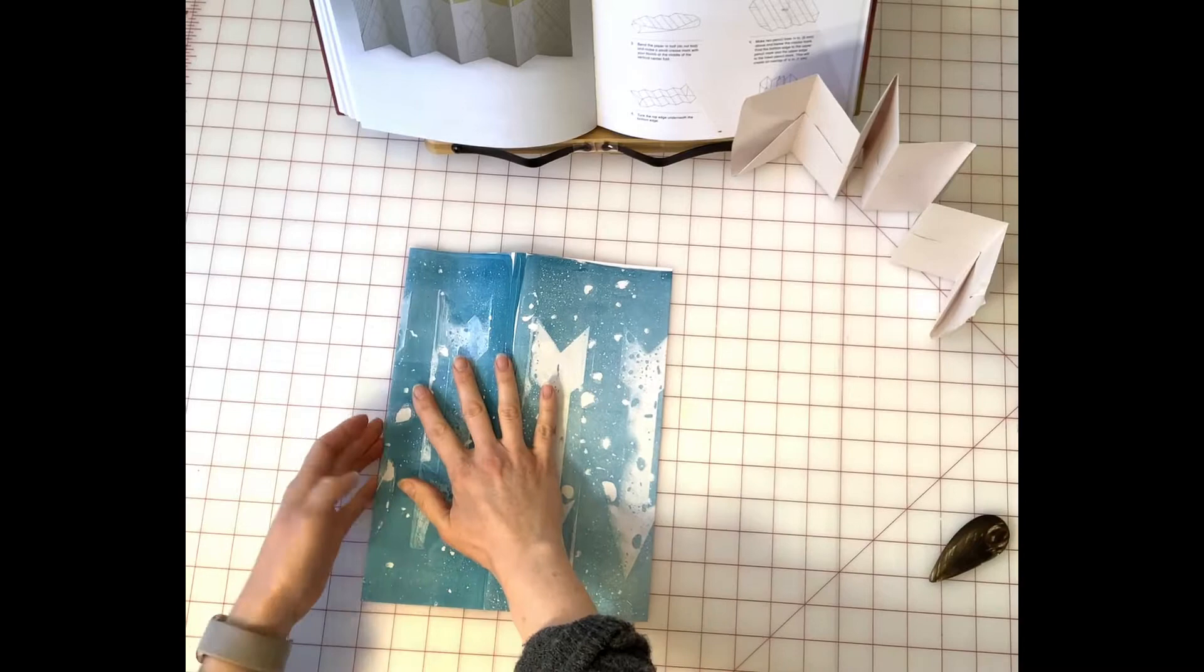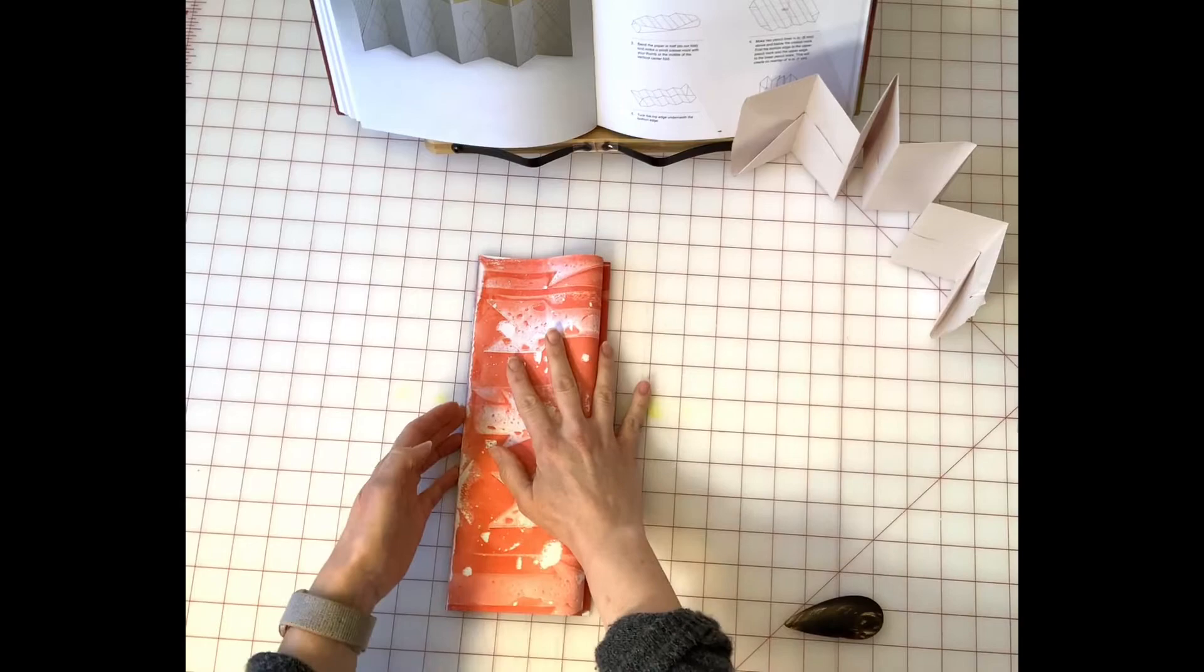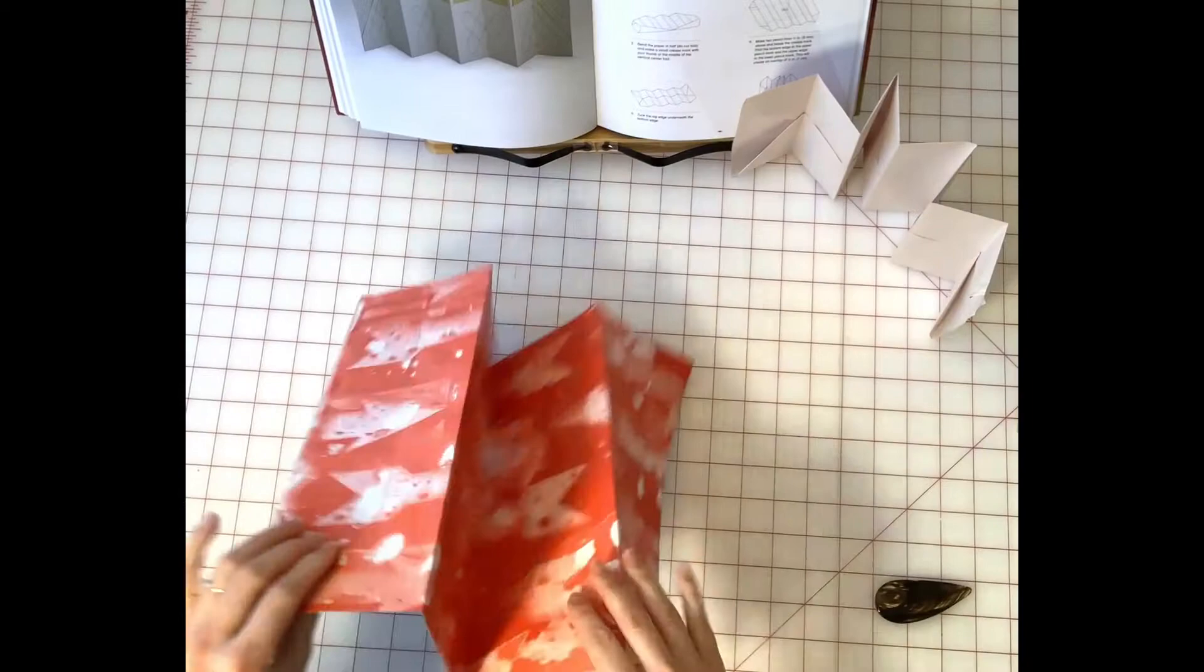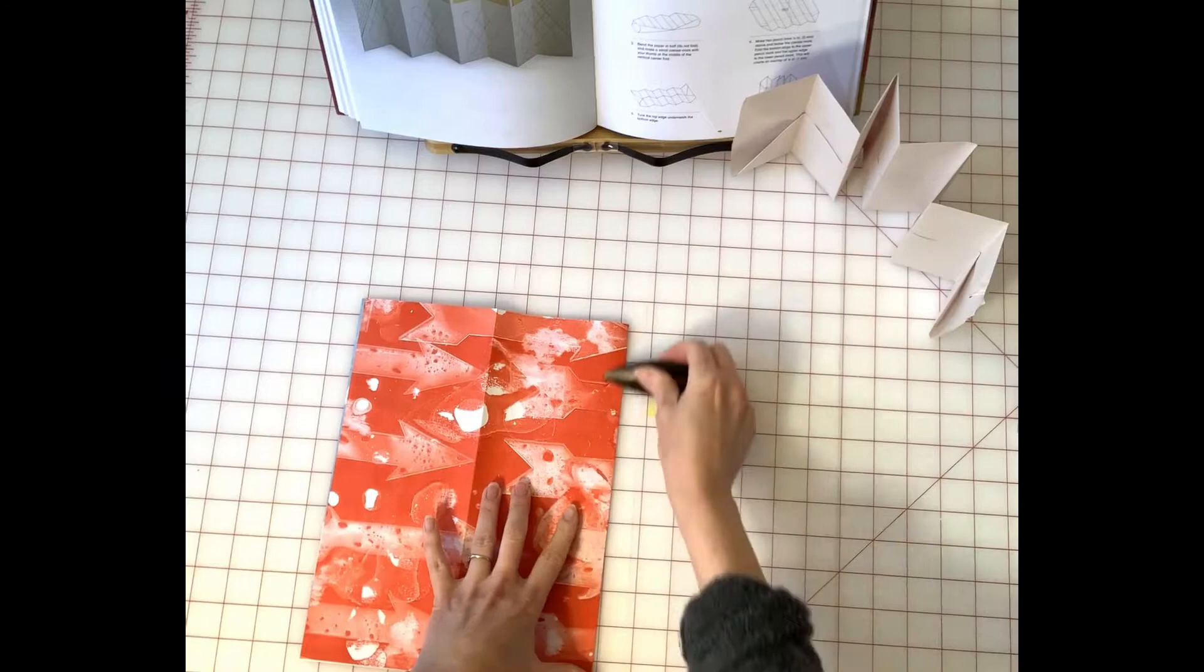When you're folding an eight panel accordion you're creating three mountain folds and then you fold those into second section. So you start with four and you end up with eight.